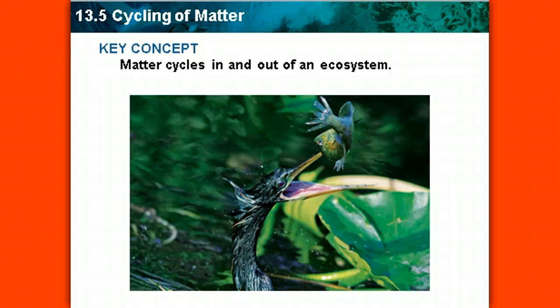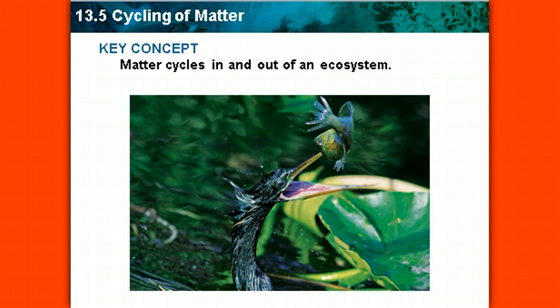So far, we've learned that energy cycles throughout an ecosystem, and that energy does not go full circle. Once it's been used by an organism, only 10% of that energy gets transferred, so it is limited. Now, nutrients, matter, and other chemicals in the environment do cycle in and out of the ecosystem. Some of them are needed by many other organisms, things like carbon and oxygen, so they can continue to reproduce. Let's find out exactly how matter cycles in and out of an ecosystem.